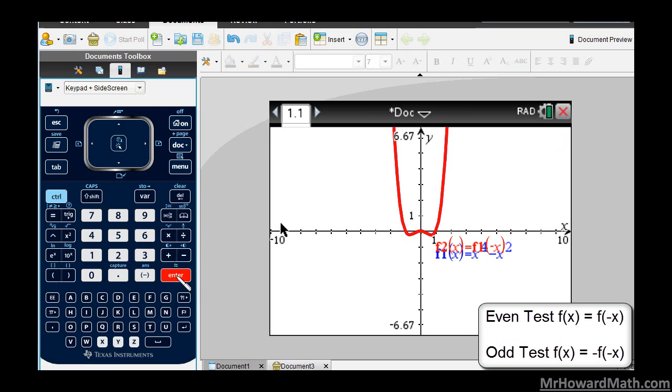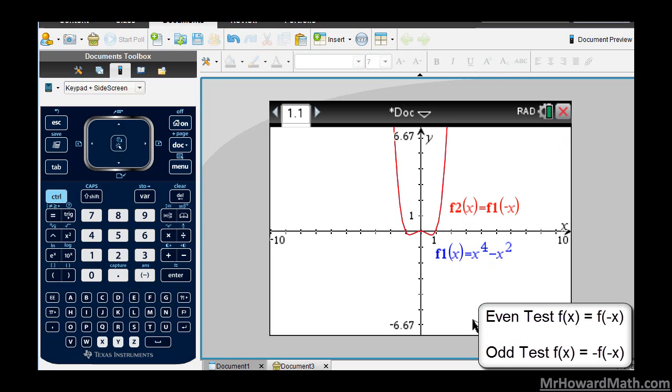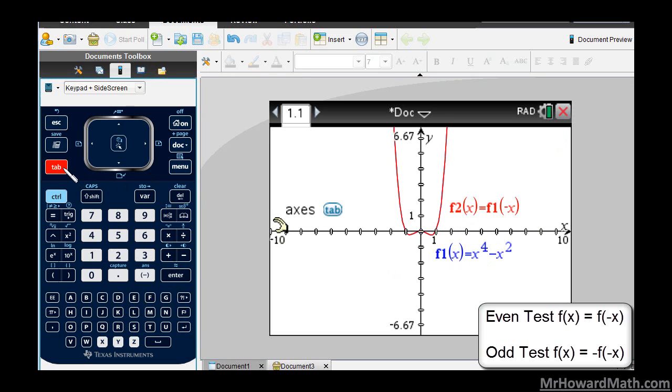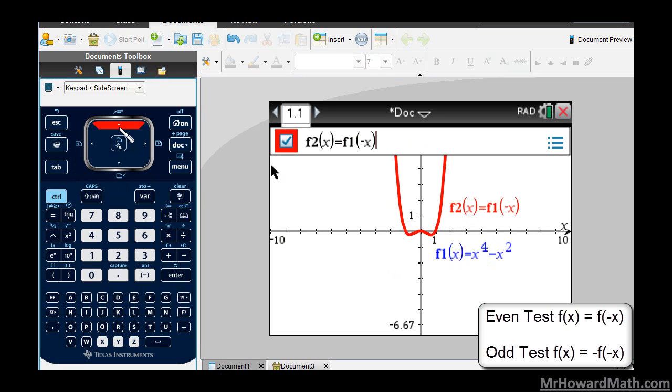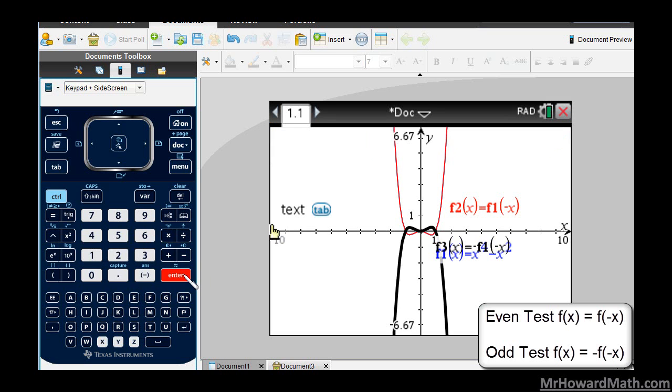Now I've put in the even test and I want to put in the odd test. The odd test says that f of x should be the same as negative f of negative x. So I'll put in a negative, var key, choose the function 1 because that's where my original function was of negative x. I've just entered in the odd test there. Hit enter and it'll graph it.